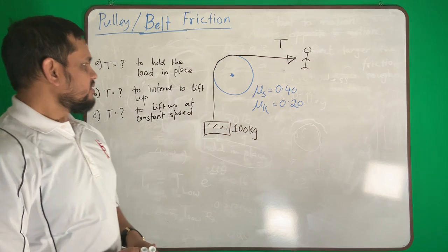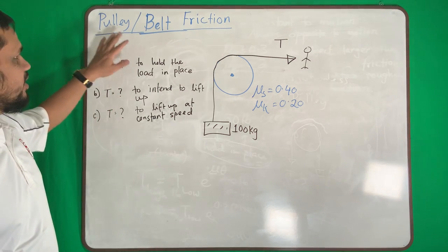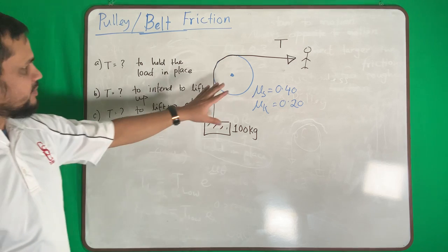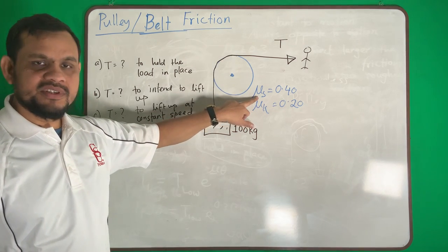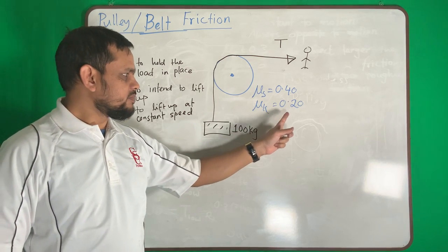This time I will solve an example for pulley or belt friction. So this is my example. There is a pulley here. Coefficient of static friction is 0.4, coefficient of kinetic friction is 0.2.